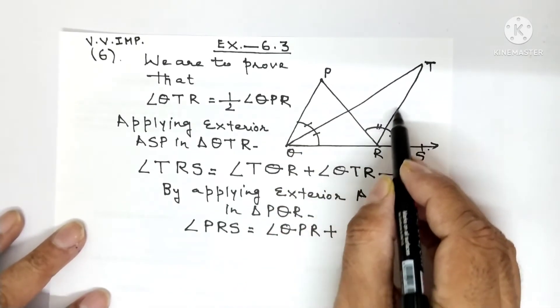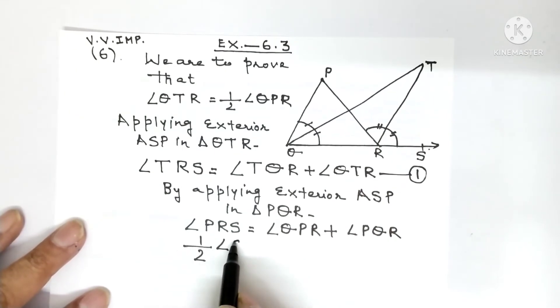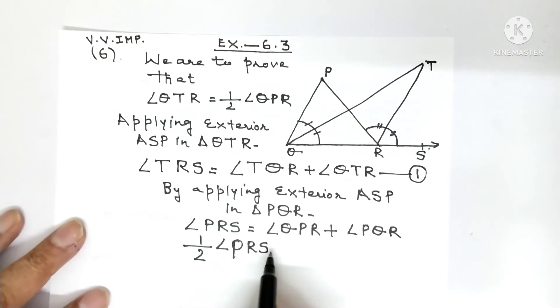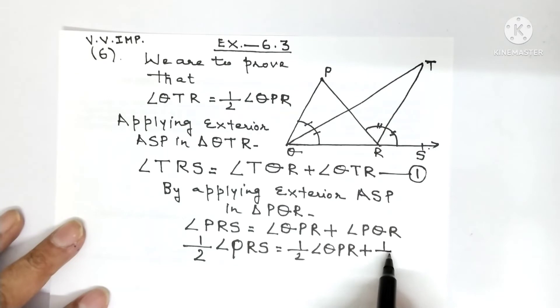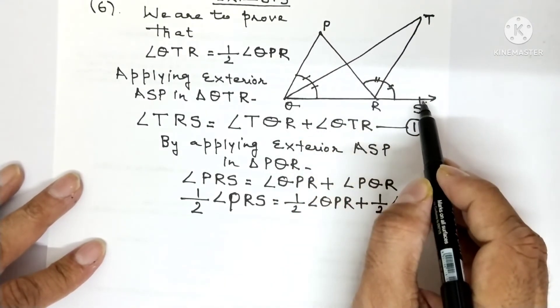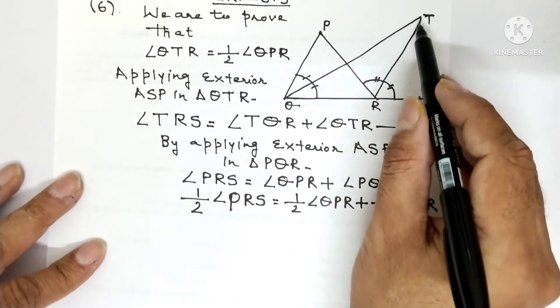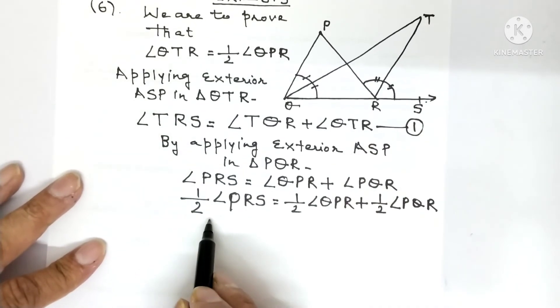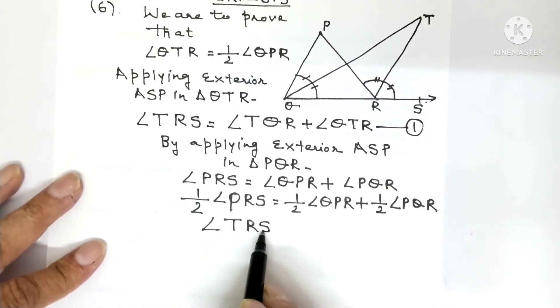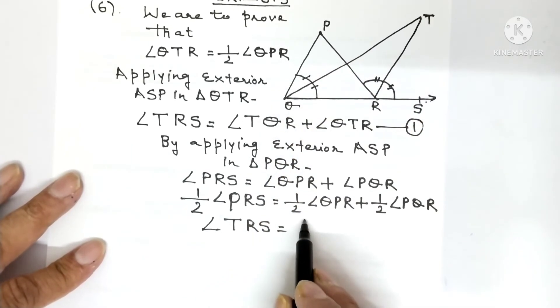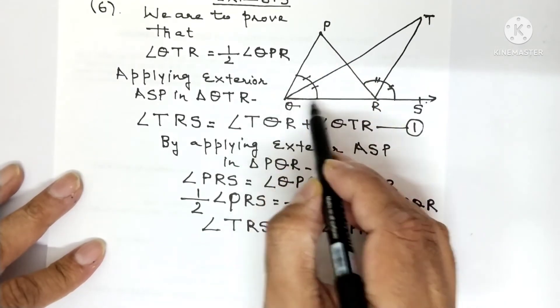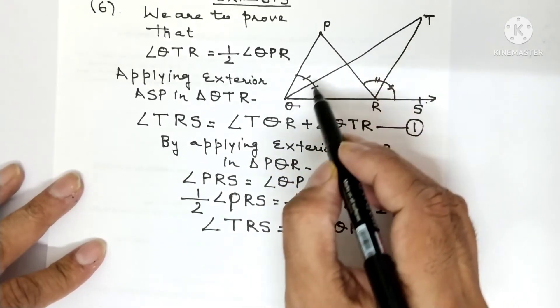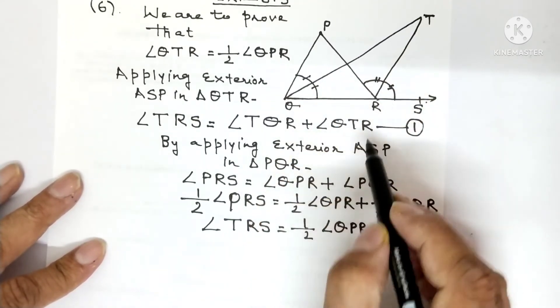Now, since RT is the bisector of angle PRS, you can take half of both sides. Half of angle PRS equals half of angle QPR plus half of angle PQR. Now half of angle QPR you keep as it is. Half of angle PQR can also be written as angle TQR. So this becomes equation number 2.